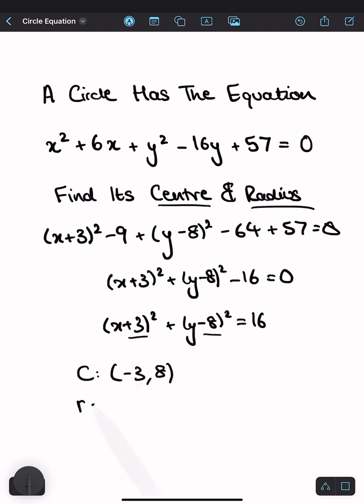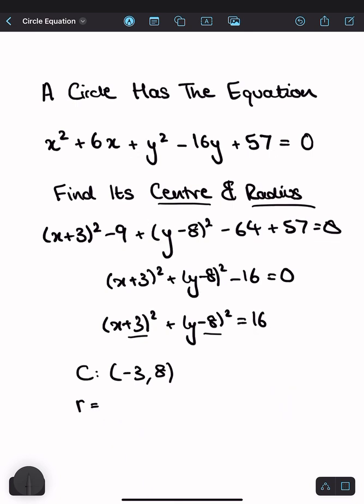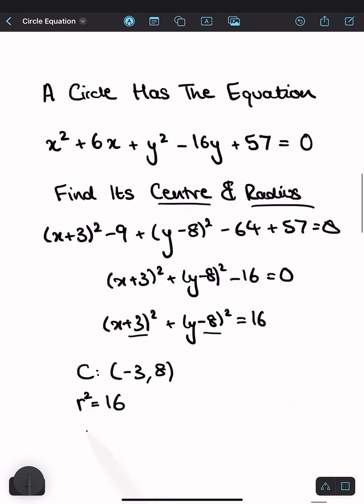And the radius of the circle is given by, well, first we know that r squared is equal to 16, therefore the radius is equal to the square root of 16, which is just 4. And this is our answer.